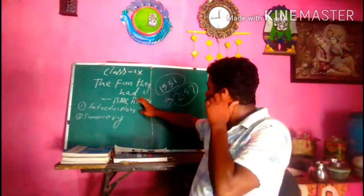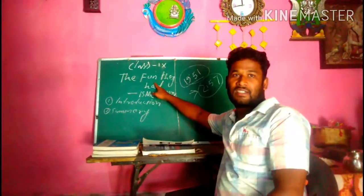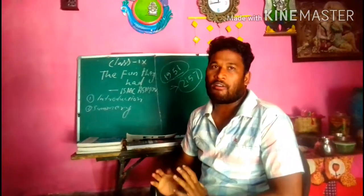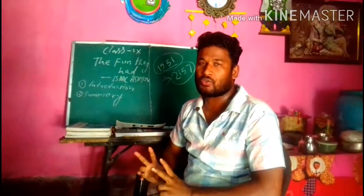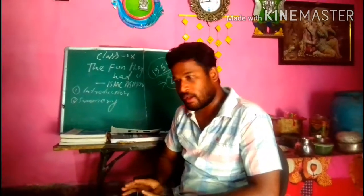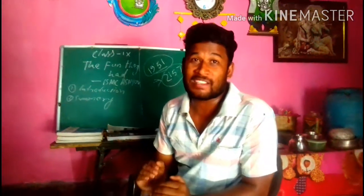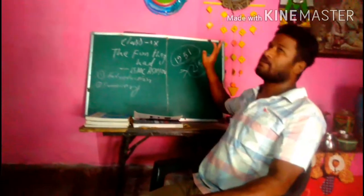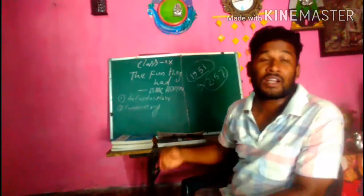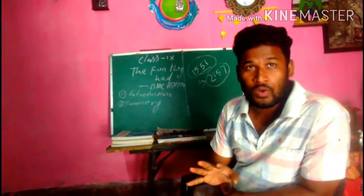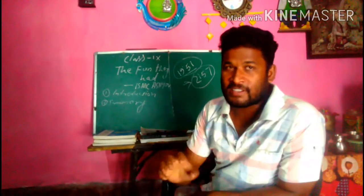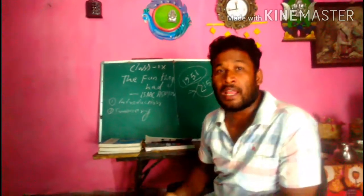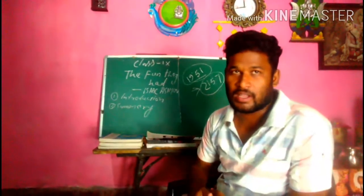This is another topic in the chapter. 'The Fun They Had' refers to fun, enjoyment, and delight of the present-day schooling system. Tommy and Margie, brother and sister, try to understand the schooling system of the present day, but they do not belong to the present — they belong to 2157, the future. This is a science fiction. But one thing is clear: whatever may be the fiction — the characters, the plot — the things that it teaches us are really implementable in our lives. That is why fiction exists.